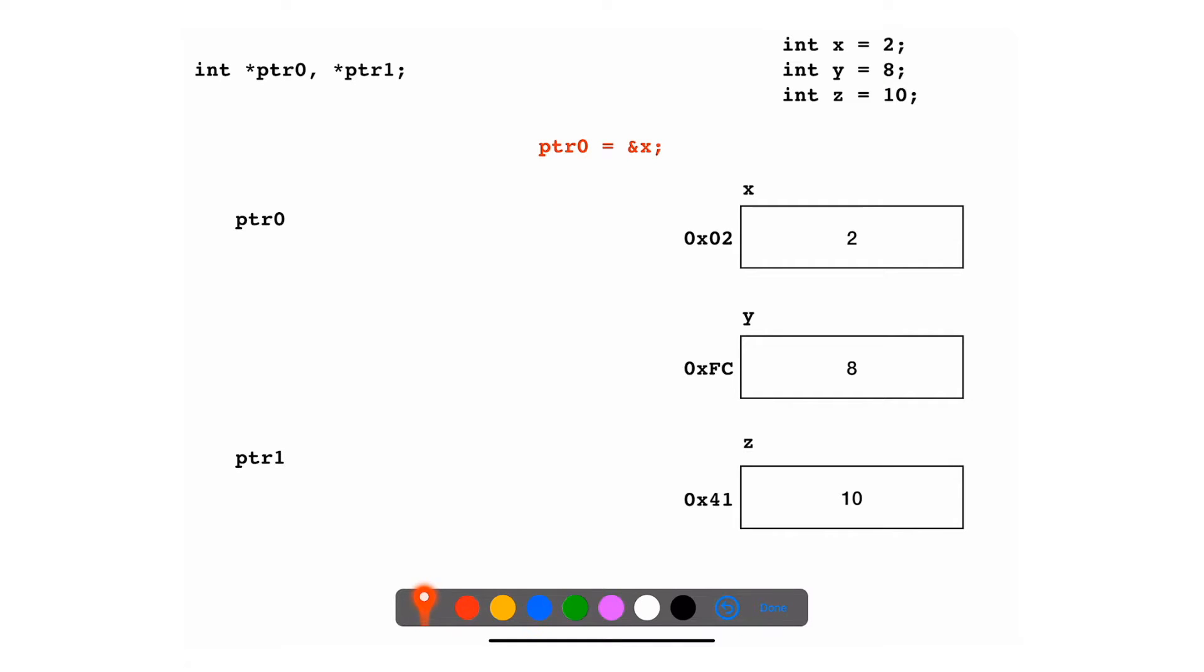So what we're going to be doing first is I want to assign something to this pointer 0. The first thing I'm going to assign is &x. And & stands for the address of variable x. So this will be translated to the address of variable x, which is 0x02. So what I'm actually doing is I'm making that pointer point to this particular x. The content of ptr0 is actually the address, the value of the address. So pointer 0 contains the address it points to.